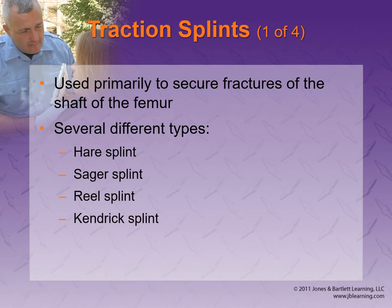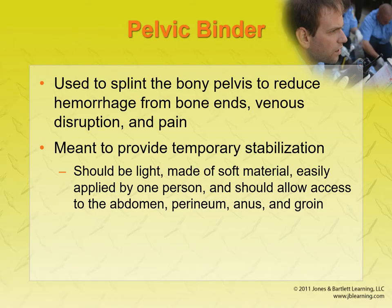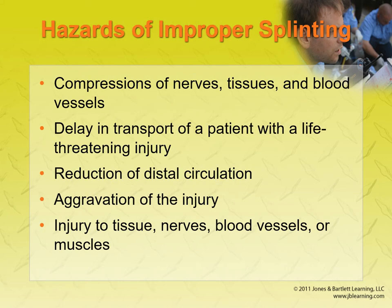Traction splints — mid-shaft femur fracture is really the only indication. We really don't want to be pulling on anything else. A pelvic binder is just a wide strip — Velcro-type fabric, or you can even use the patient's pants. All you're trying to do is hold it all in, like closing a book, just kind of putting everything together. If there's a hip fracture, those bone ends can be rubbing against each other, causing a lot of damage, so we want to splint the pelvis as best we can.